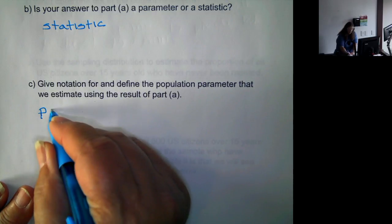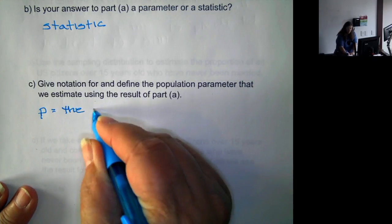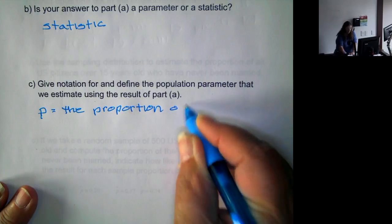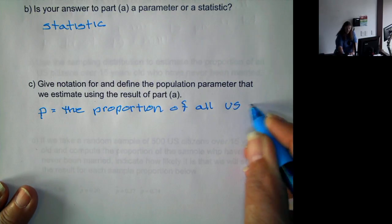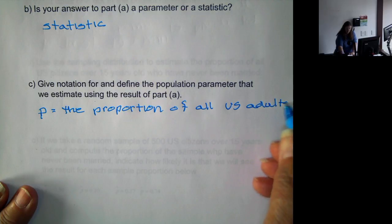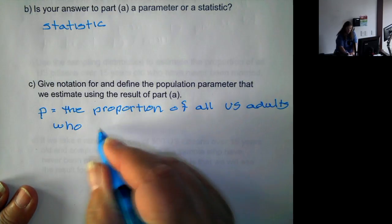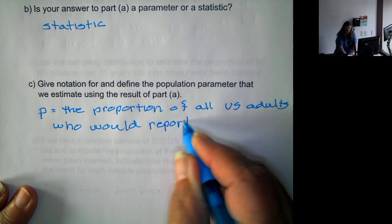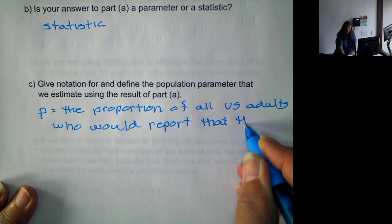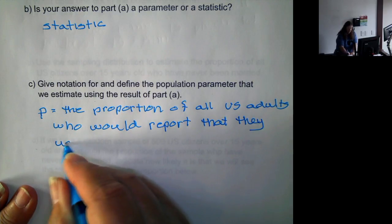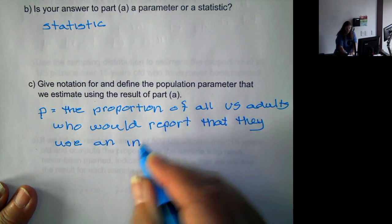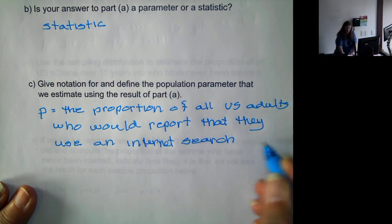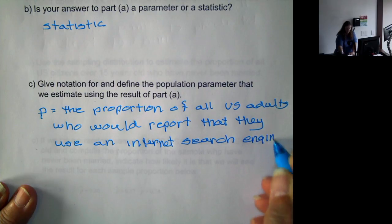And the definition: P equals the proportion of all U.S. adults who would report that they use an Internet search engine every day.